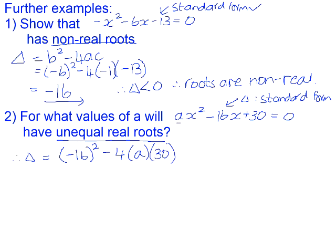If we simplify that, (-16)² is 256, and 4 times 30 is 120, so it will be 256 - 120a. Here, we can't see what our actual value for delta is because it still contains a variable.